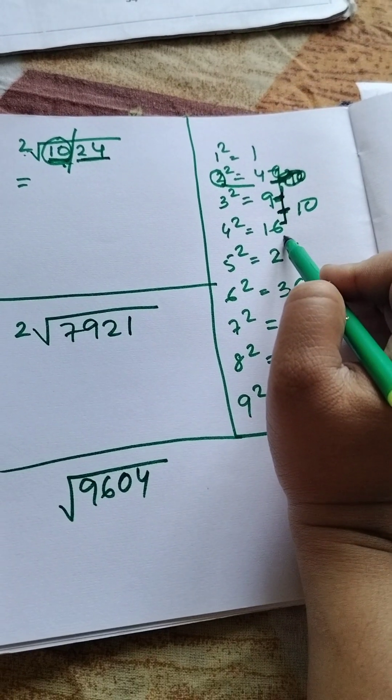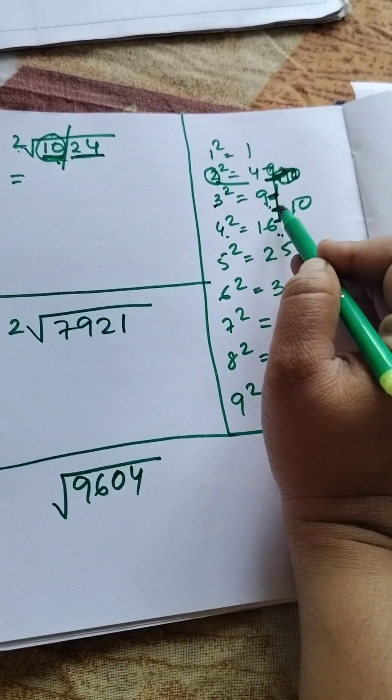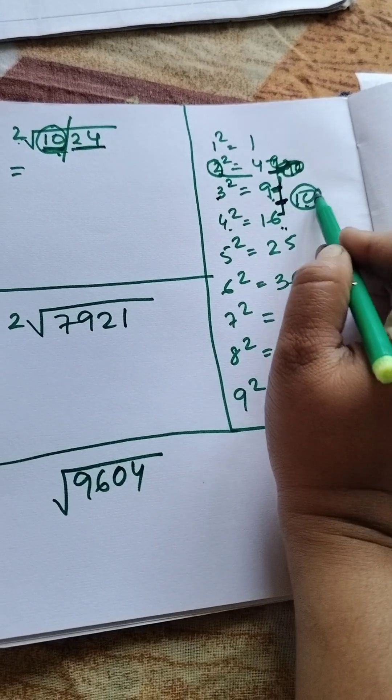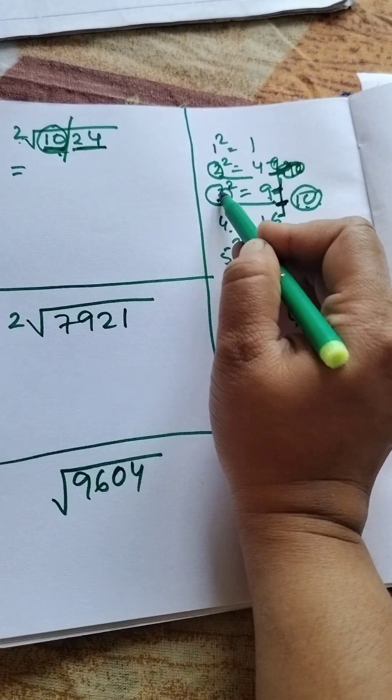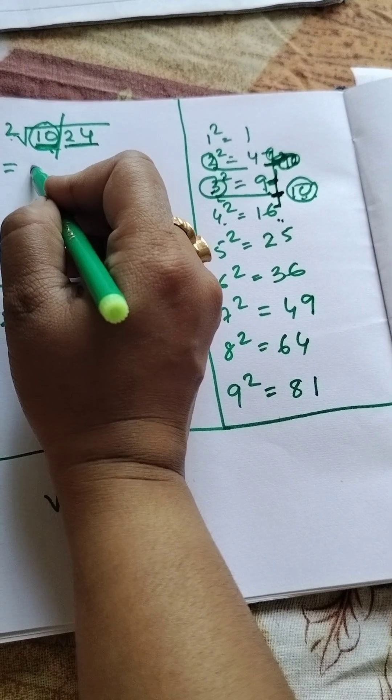9 and 16. 3 squared is 9, 4 squared is 16. In between is 10, right? You have to write down 10 for 3 squared. Write down the first number is 3.